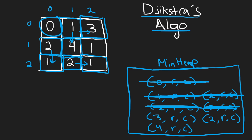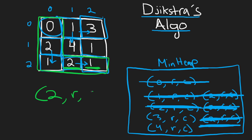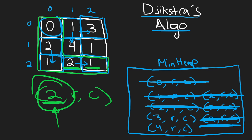Finally, we pop a value and check its coordinates — they match the destination coordinates. So we return now. What do we return? We don't need to trace back through the entire path because when we added this position to the min heap, we stored the max height it took to reach it, which was two. That's the value we return and we're done.